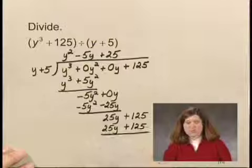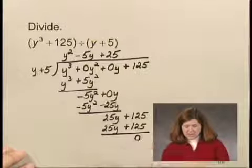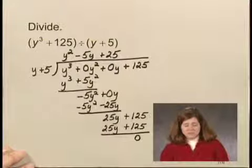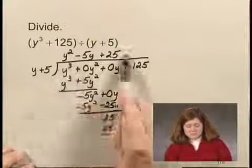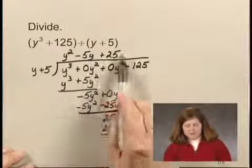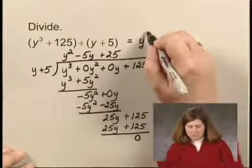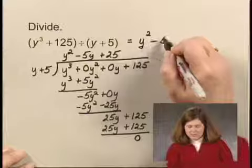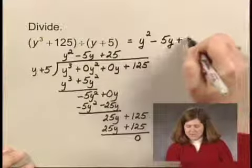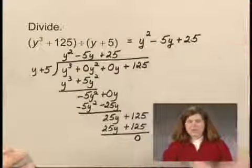Since those are equal, when I subtract, I have a remainder of zero. The quotient is read right off the top of the division problem. This would equal y squared minus 5y plus 25.